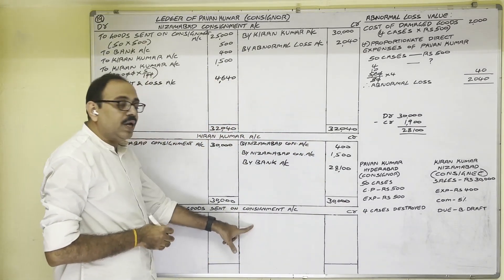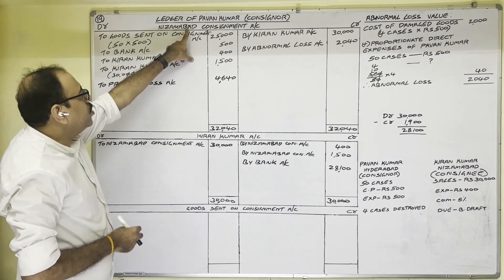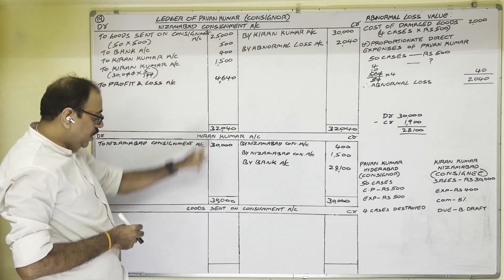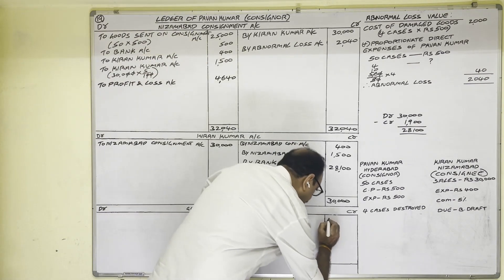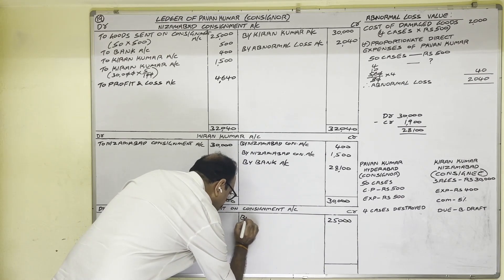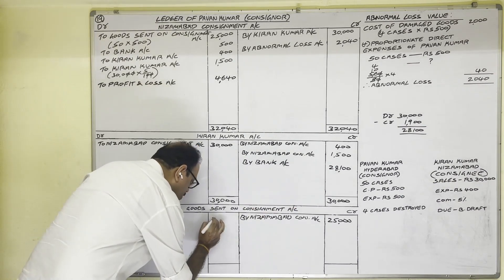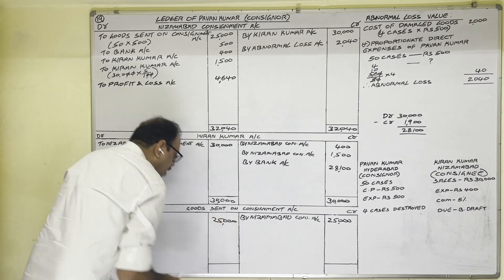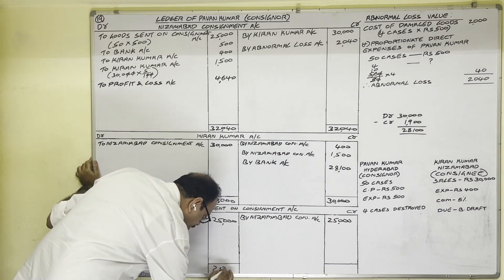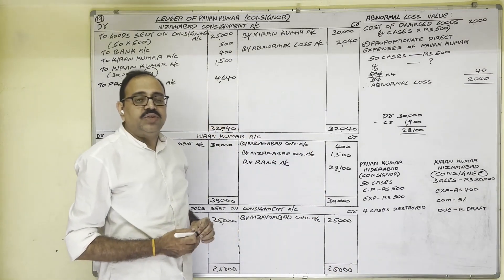Next we prepare the Goods Sent on Consignment Account, taking reference from the consignment account. In the consignment account on the debit side we wrote: To Goods Sent on Consignment Account for 25,000 rupees. So in Goods Sent on Consignment Account, on the credit side we write: By Nizamabad Consignment Account for 25,000 rupees. On the debit side we write: To Trading Account. Both sides total to 25,000 rupees. This is the end of the present problem. Hope this video is helpful to you.